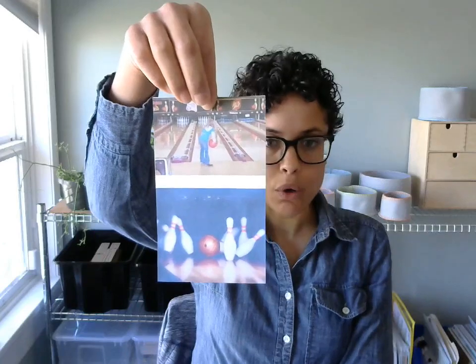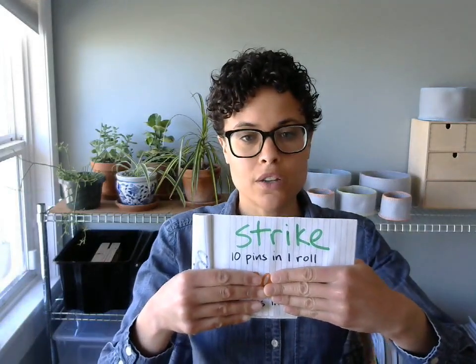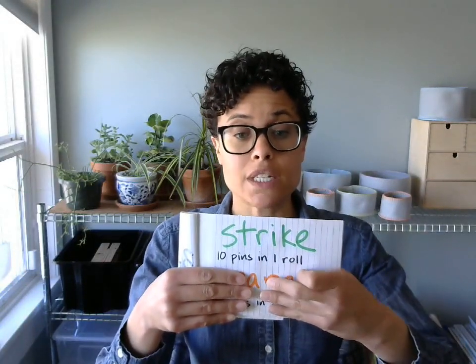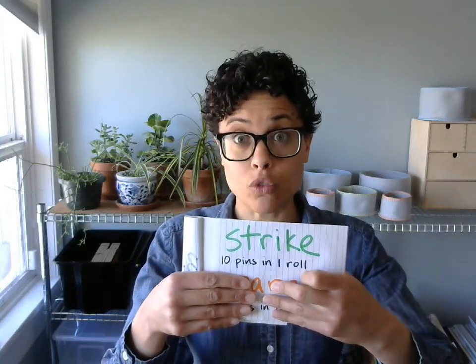Now when you go bowling, you have two chances to knock over all 10 pins. If you knock over all 10 pins on your first roll, when it's your turn, that's called a strike. So a strike is when you knock down 10 pins in one roll.